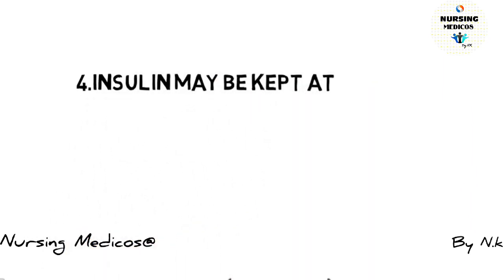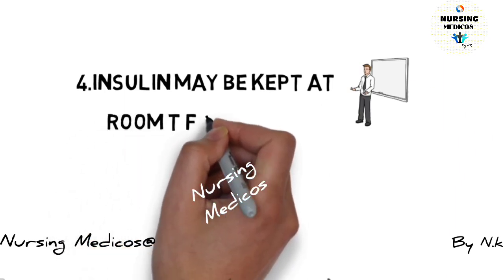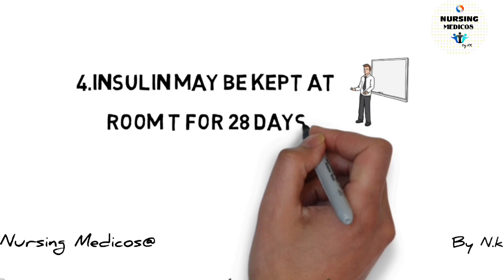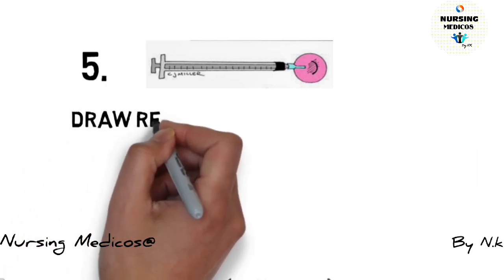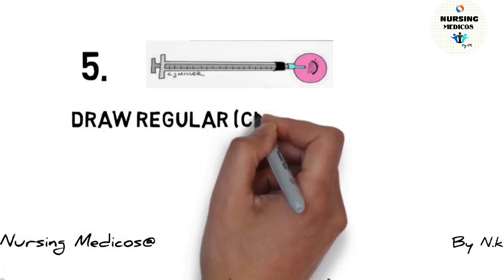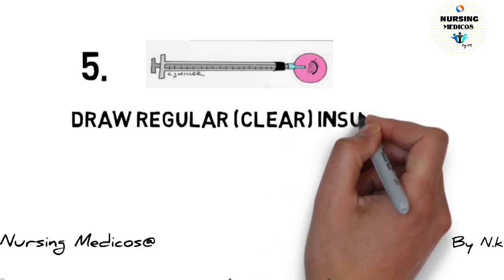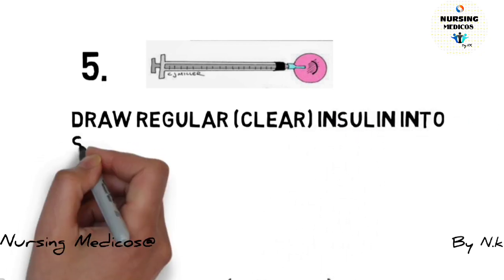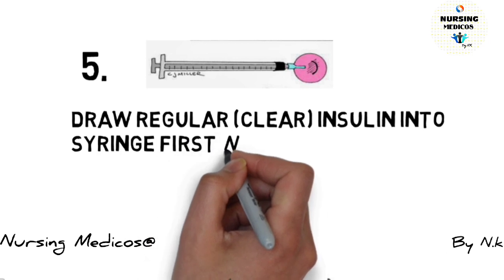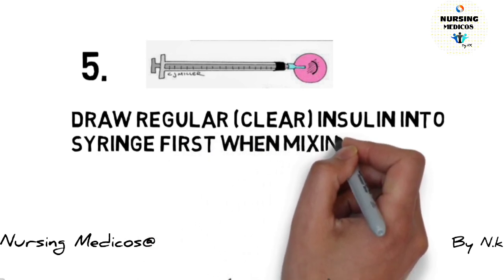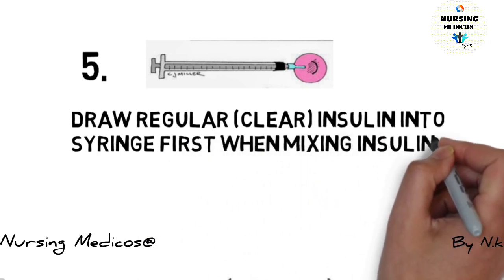Fourth one: insulin may be kept at room temperature for 28 days. Fifth one: draw regular insulin into the syringe first when mixing with other insulin.